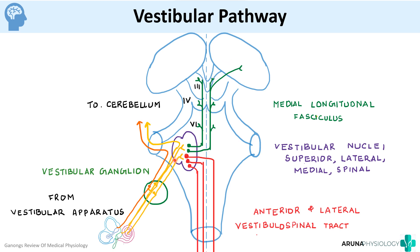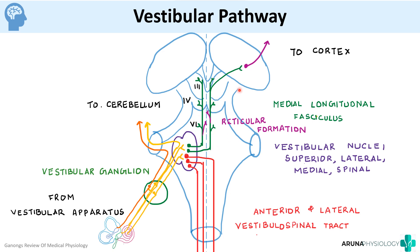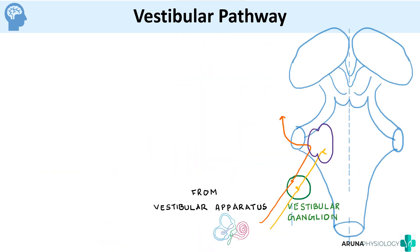Some fibers also go from the vestibular nuclei to the thalamus, and from the thalamus to the cortex. Finally, there are some fibers that project to the reticular formation as well. So the vestibular pathway goes mainly to the cerebellum, then down to the spinal cord, up via the medial longitudinal fasciculus, from there to the cortex, and finally to the reticular formation.